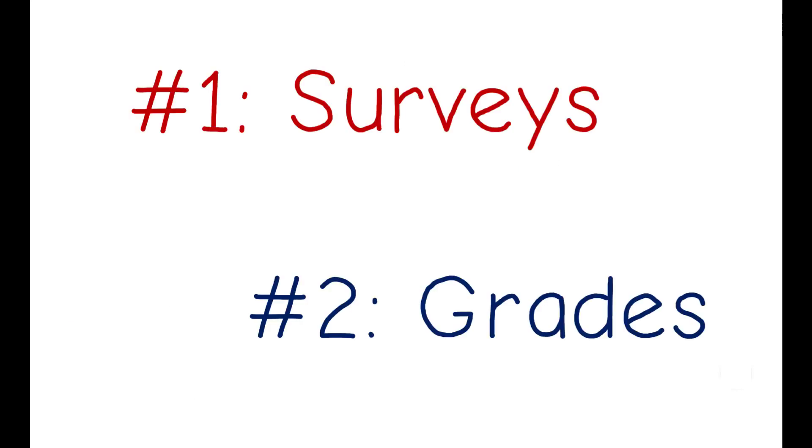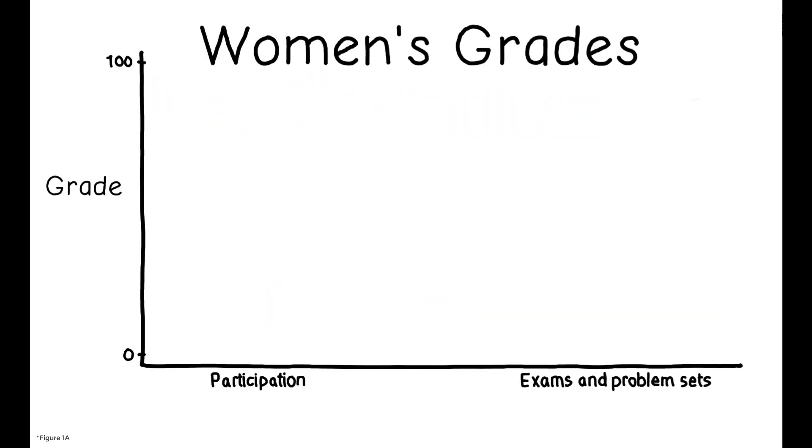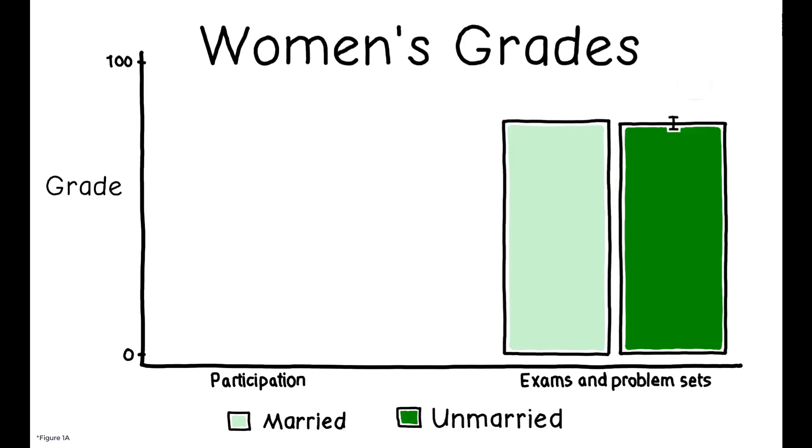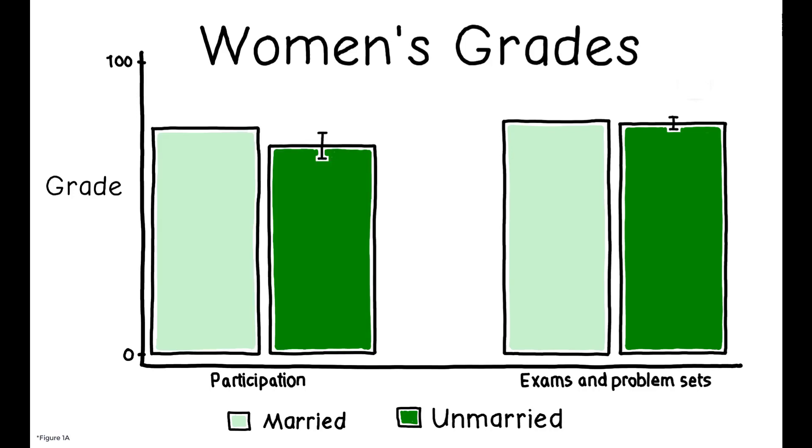The second piece of observational evidence comes from student grades, which reveal that while there is no difference between married and unmarried women's performance on assignments and exams where grades are private, unmarried women score lower on class participation, which is publicly observable and may signal a student's assertiveness.